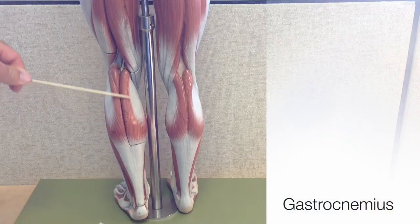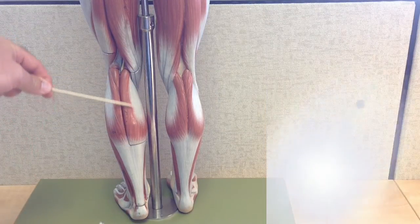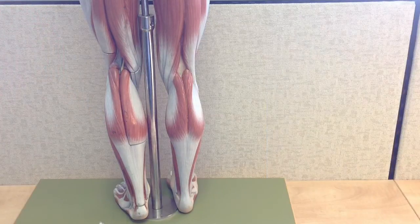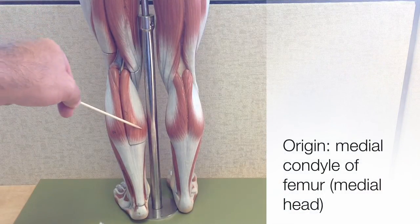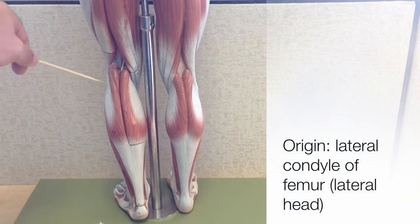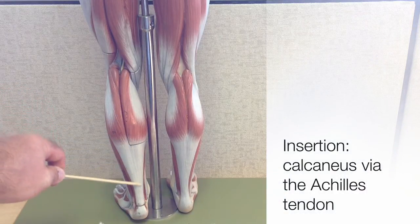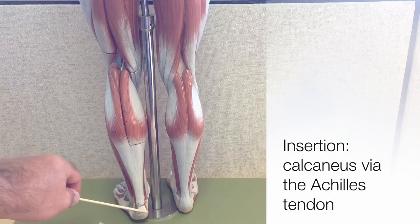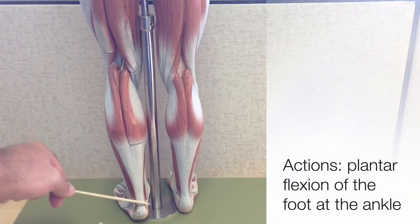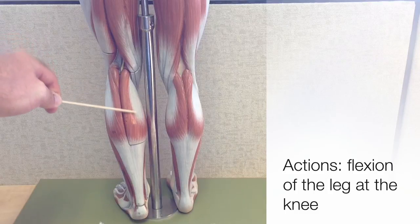Our next muscle is the gastrocnemius, the large calf muscle of the posterior lower leg. The gastrocnemius has two heads: the medial head and the lateral head. Each of the two heads has its own origin — the medial head's origin is on the medial condyle of the femur, and the lateral head's origin is on the lateral condyle of the femur. The shared tendon of both heads is the Achilles tendon, which inserts onto the calcaneus, the heel bone of the foot. Like the fibularis muscles, the gastrocnemius plantar flexes the foot at the ankle, but because of its origins on the condyles of the femur, it's also able to flex the leg at the knee.